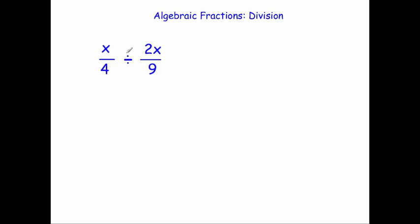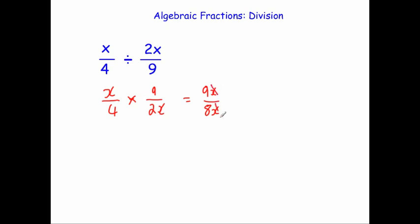Our next example: x over 4 divided by 2x over 9. We keep the first fraction as it is and multiply by the reciprocal of the second one, which is 9 over 2x. Multiplying gives 9x over 8x. Now we cancel the x's, leaving us with 9 over 8, or as a mixed number, 1 and one eighth.